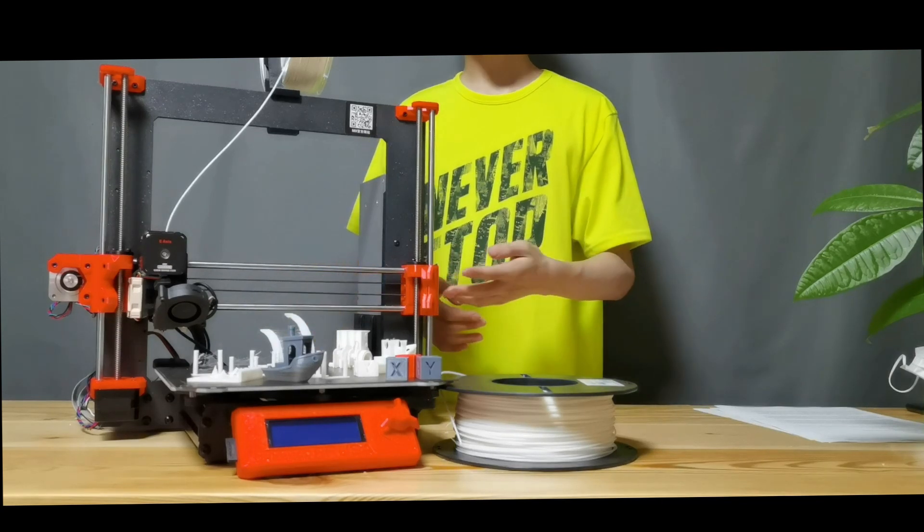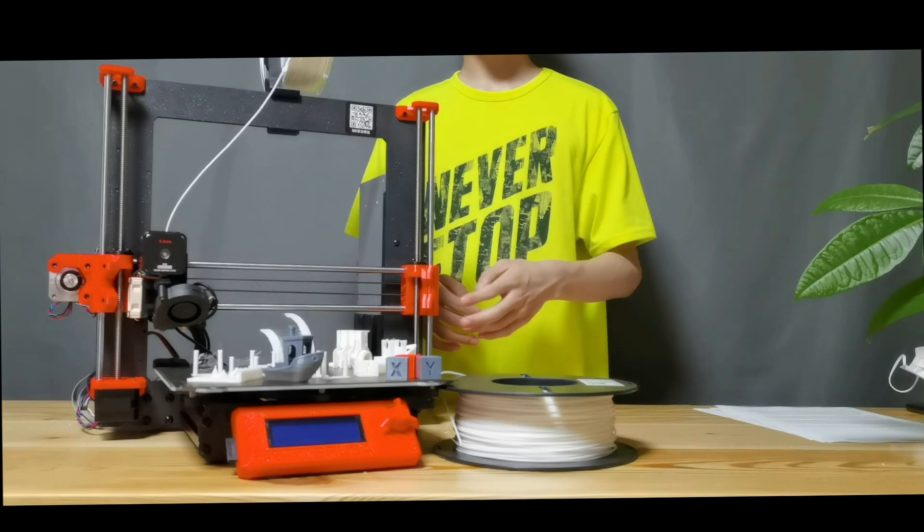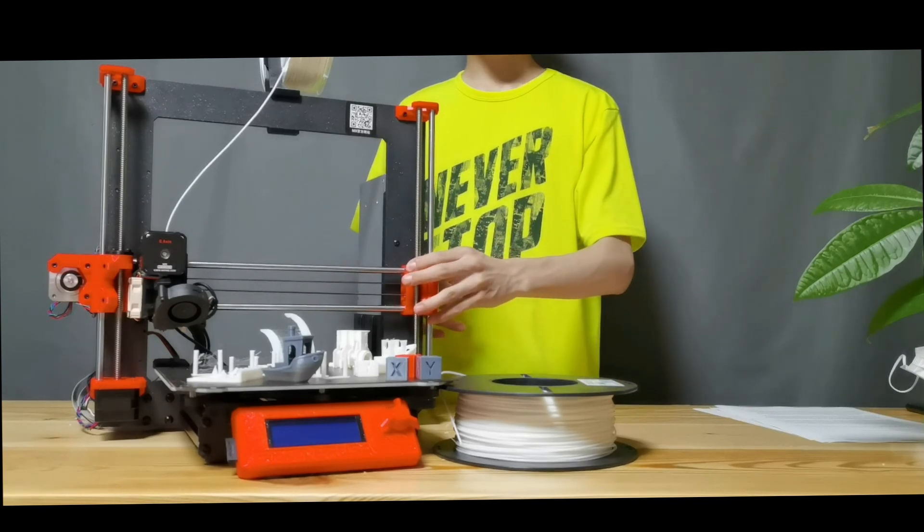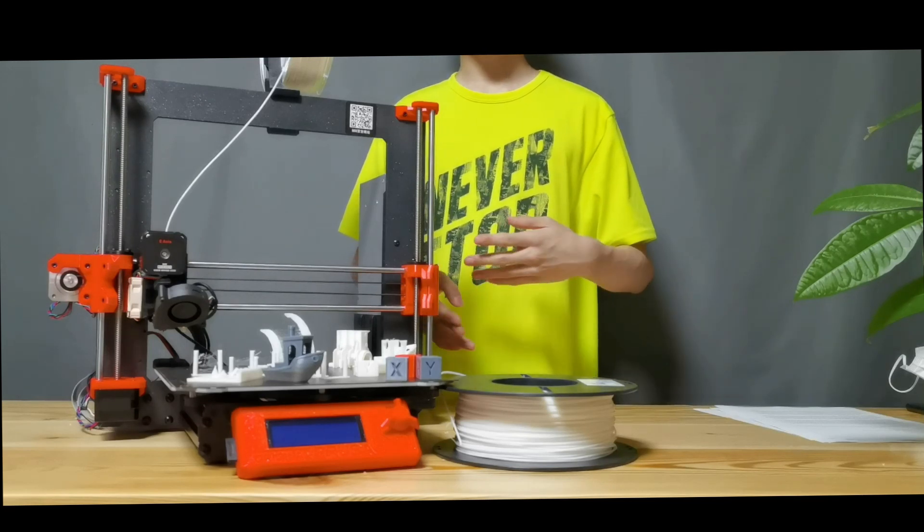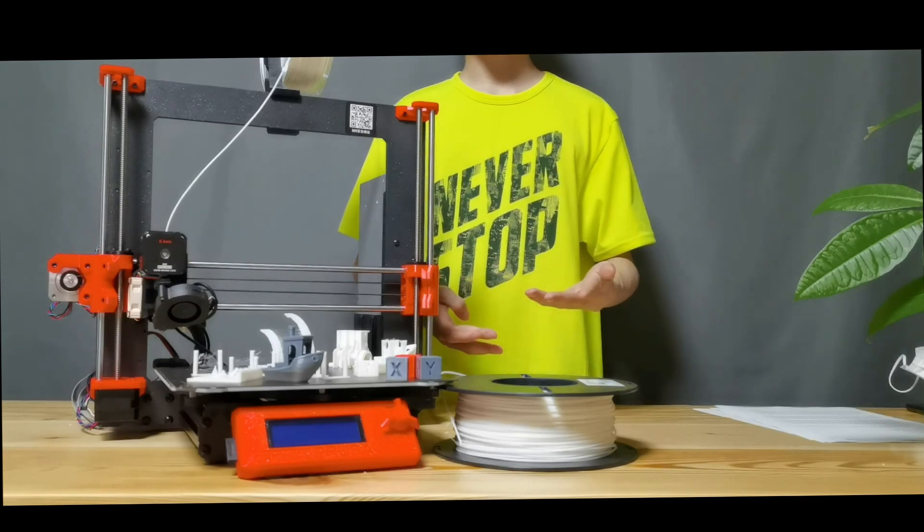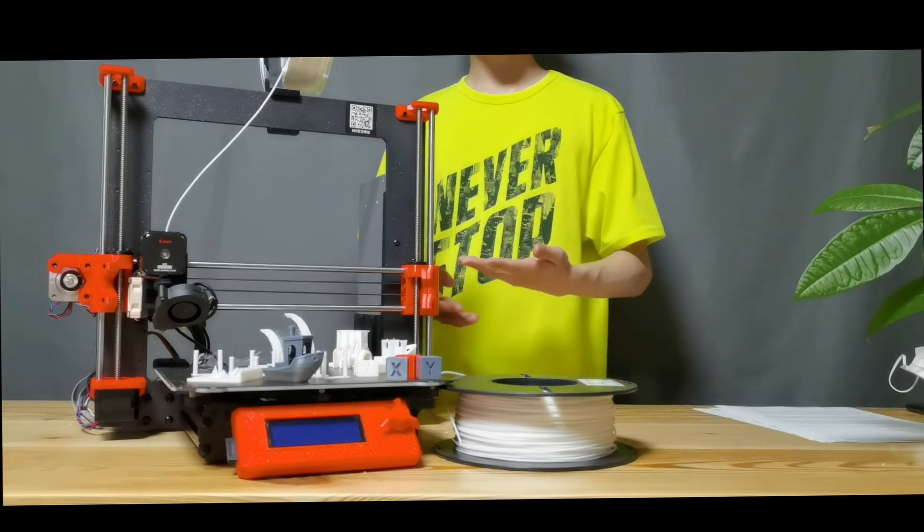It was mostly because the manual didn't say to screw in these two screws. And this is a revised X-axis, so I wasn't able to find information on it, at least in manual form on the Prusa website.